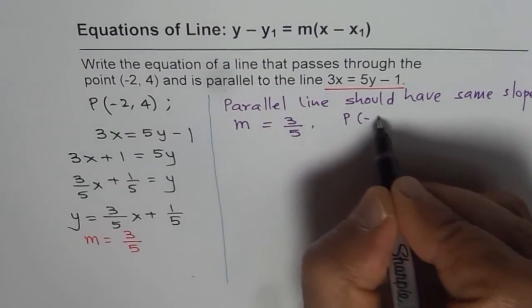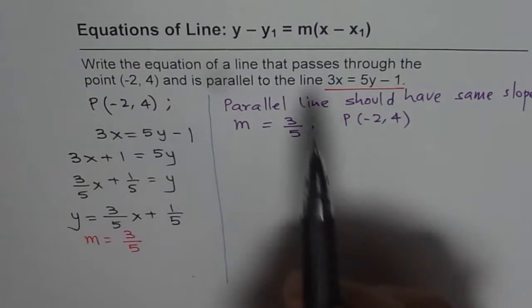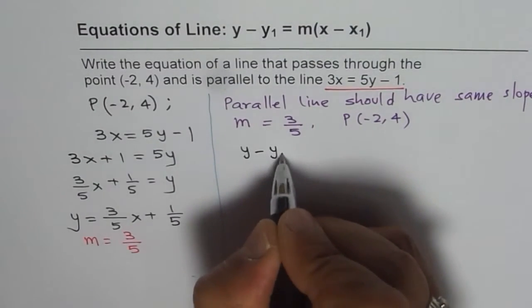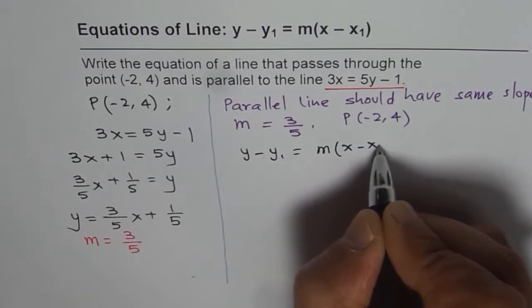So we now know the slope of the line also and we know the point and the point given to us is minus 2, 4. So we need to find equation of the line in the given form. So the form is y minus y1 equals to m times x minus x1.